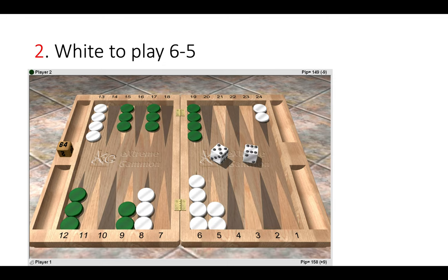Position 2. White to play 6-5. Now again it seems right to make the running play, going for lovers leap, running, safetying a checker. But again it's wrong.